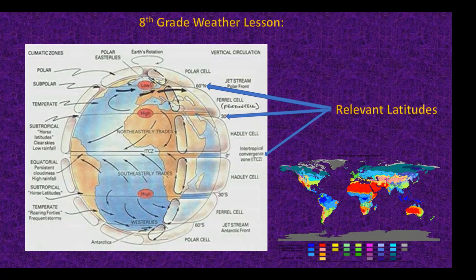Earth's weather is split into six bands with three above and three below the equator. At the poles lie two polar cells, carrying cold wind down to approximately 60 degrees north or south. The ferrel cells carry warm wet air from latitudes 30 to 60. The Hadley cells, between the equator and 30 degrees, carry air toward the equator — which is why the equator has some of the warmest and wettest places on the planet. The three latitudes of interest are: the intertropical convergence zone at latitude zero, the horse latitudes at 30 degrees north and south, and the polar front at 60 degrees north or south.